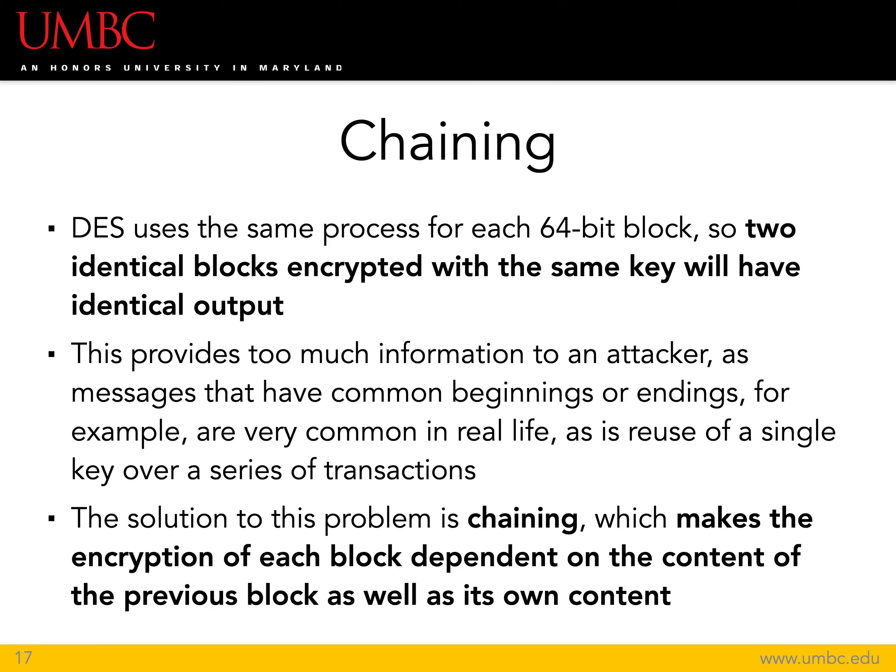Now we're going to move into chaining, which is a problem that DES suffers from — or rather, DES suffers from a problem that chaining solves. Essentially, the same process is used for each of the 64-bit blocks in the cipher. So if you have two blocks that happen to be identical and you're using the same key, you're going to get exactly the same output. This is really problematic because it basically makes each individual block a separate individual message, which can make it very easy for an attacker, especially for messages that have common beginnings or endings — which happens often in real-life scenarios. You'd be much more equipped to figure out what all the middle blocks are by having decrypted the first or last set of blocks.